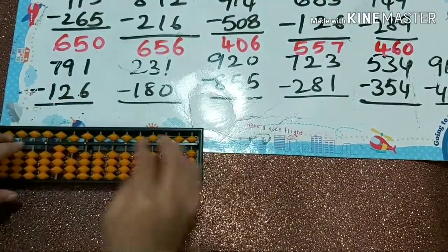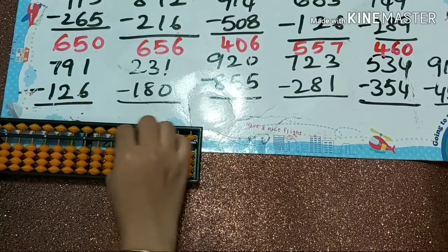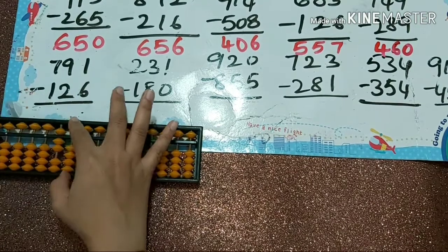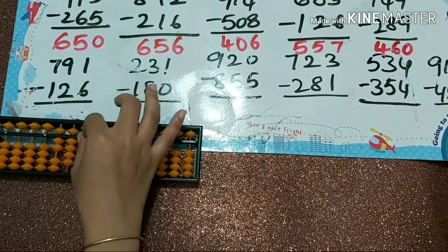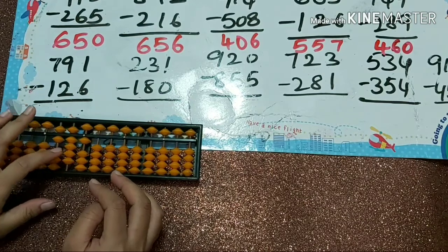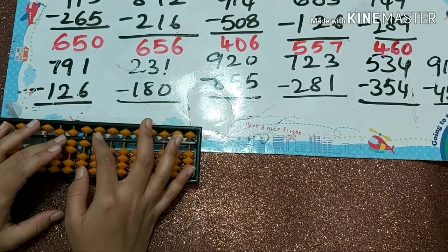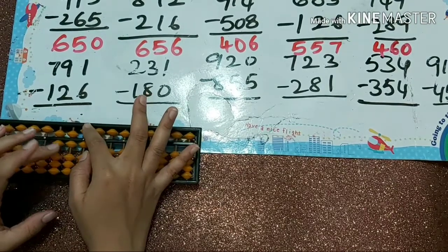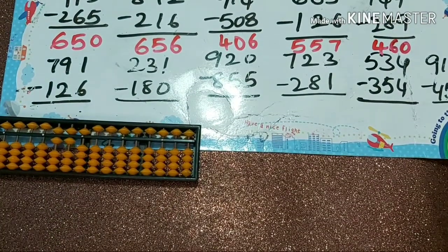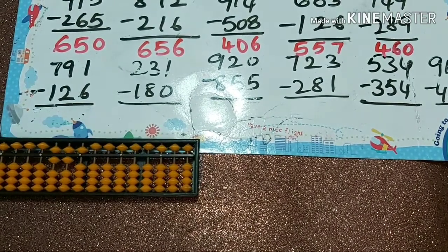Next one: 791 minus 126. Minus 1, minus 2, minus 6 — how to do minus 6? Papa down, mama down, baby's down. Answer is 665.